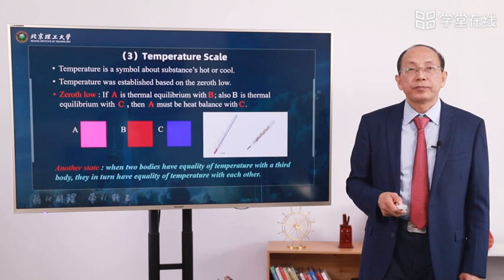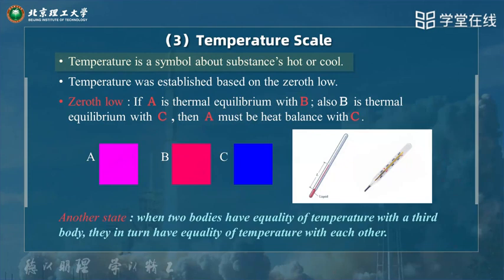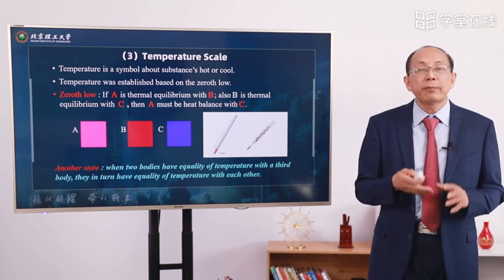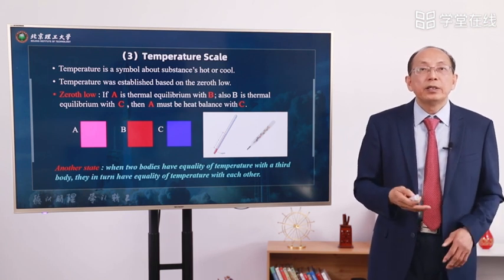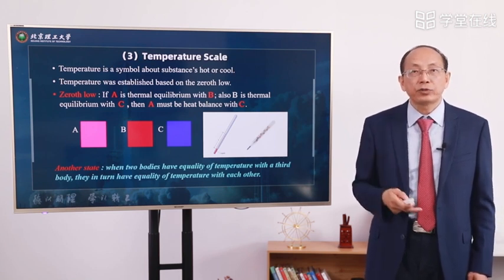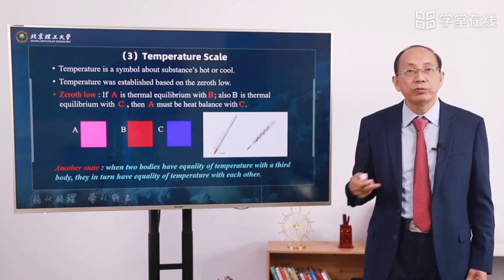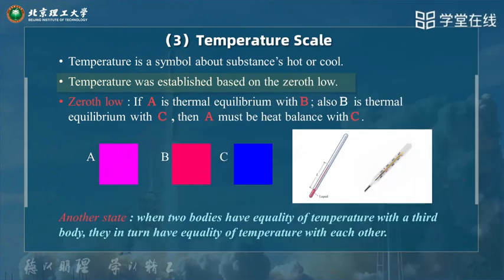This section we will study the temperature scale. Temperature is a symbol about a substance being hot or cool. Something very hot certainly has a very high temperature; when it is very cold, the temperature is very low. Temperature was established based on the zeroth law.